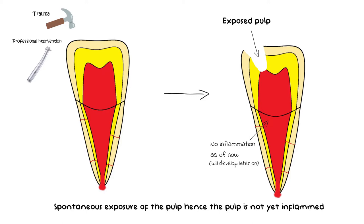Nevertheless, most of the time — especially with a caries lesion — the exposed pulp will eventually undergo necrosis because bacteria have gained access to the pulp. This necrotic pulp will later become infected. This entire process, however, takes time and is usually a relatively slow process.